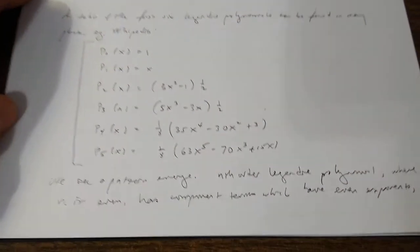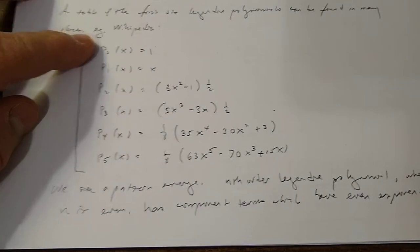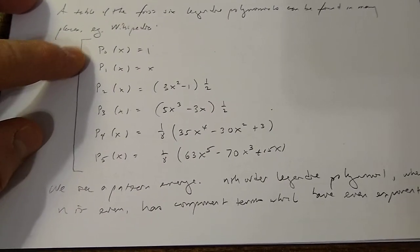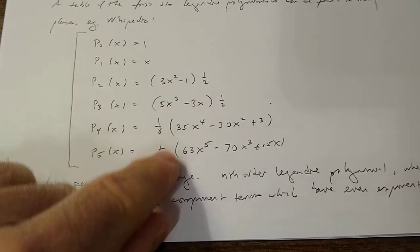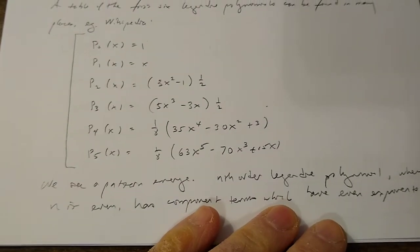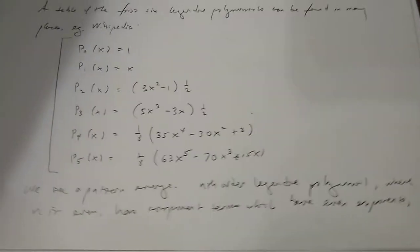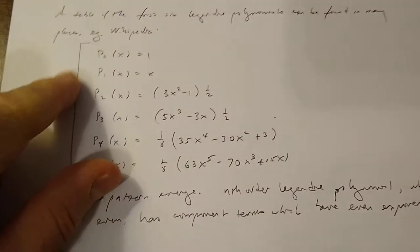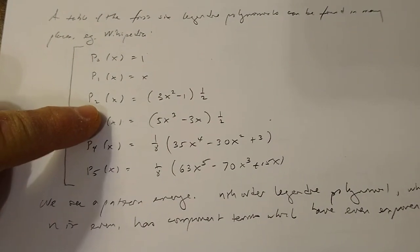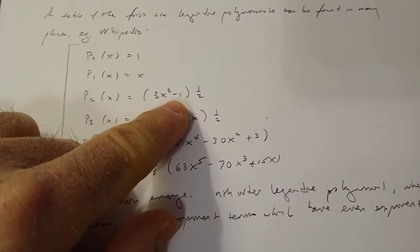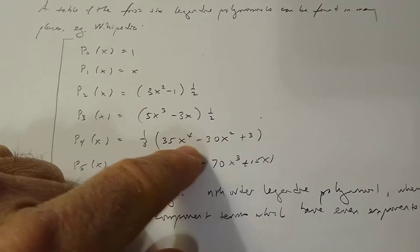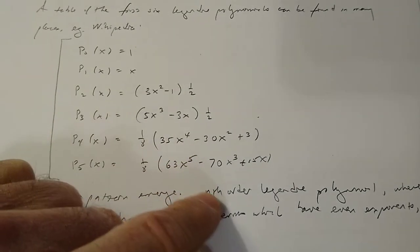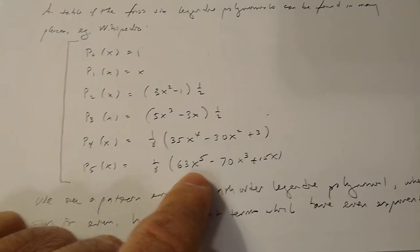You can look in Wikipedia or other places and get the table. The zeroth order Legendre polynomial p(x) is 1, the first order is x, the second order is one-half times (3x² − 1), and so on. The first thing you should notice is that there's a pattern emerging: if you have an even order Legendre polynomial you're going to have even powers of x, and if you have an odd order polynomial you're going to have odd powers.